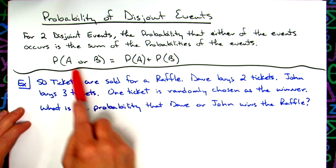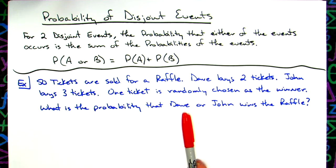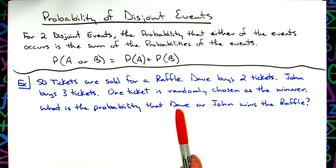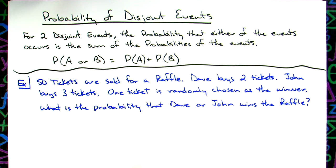So basically, I do have disjoint events here, because two people cannot win — two people can't win if there's one winner. So the outcomes for Dave, he's picking two tickets out of those 50, and John got three. So these are definitely disjoint events.